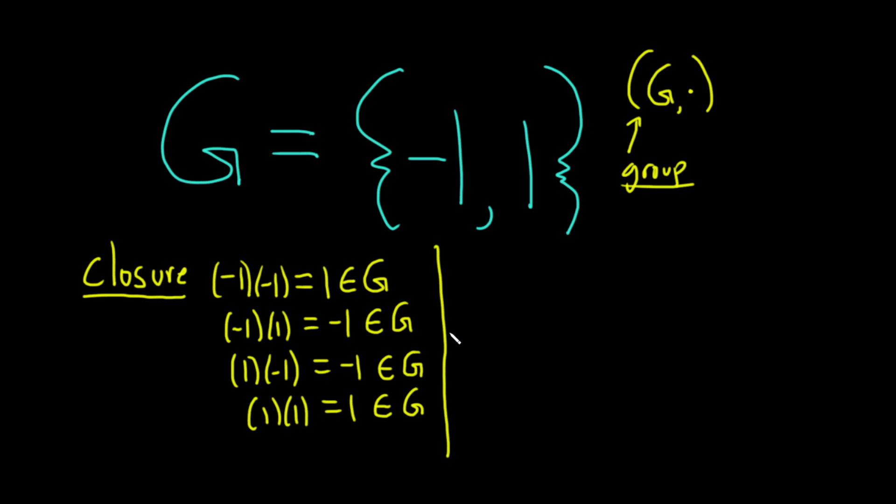And then we have to look at associativity. And the good news is we're not going to have to go through and verify associativity because we can just simply say that multiplication of real numbers is associative. These are real numbers, therefore,